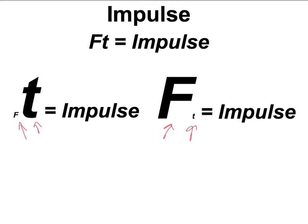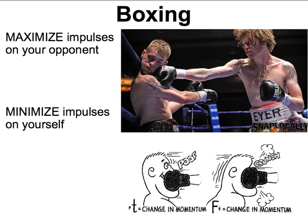I want to give a couple of examples, and after this video we're going to watch another video about how this concept works in saving our lives when we drive cars. The first example I want to look at is boxing. The whole purpose of boxing has to do with physics — you want to maximize the impulses you have on your opponent and minimize the impulses you have on yourself.